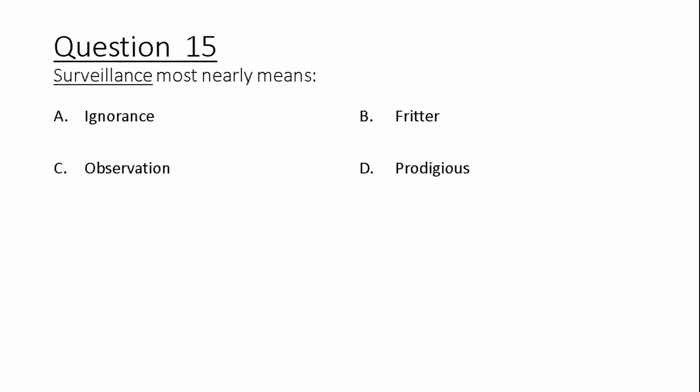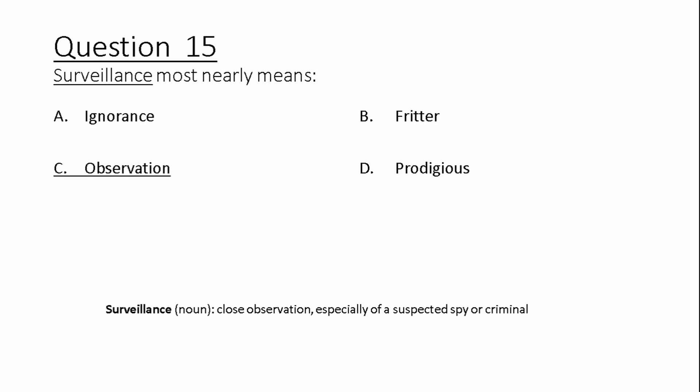Question 15. Surveillance most nearly means: A) ignorance, C) observation, B) fritter, D) prodigious. Surveillance: noun, close observation, especially of a suspected spy or criminal.